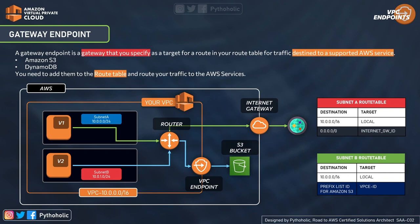Remember this clearly: the interface endpoint uses the elastic network interface, while the gateway endpoint uses the route table for routing and traffic redirection to access the AWS service privately. In the route table, Subnet A has local routing for the VPC CIDR block and internet traffic directed to the internet gateway. Subnet B uses the prefix list ID for Amazon S3 with the VPC endpoint ID as the target.